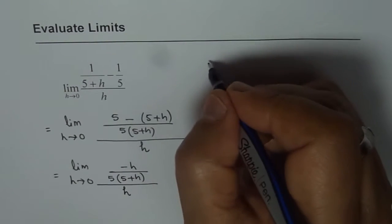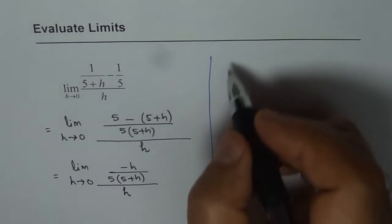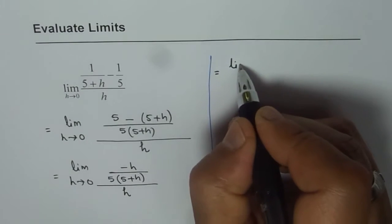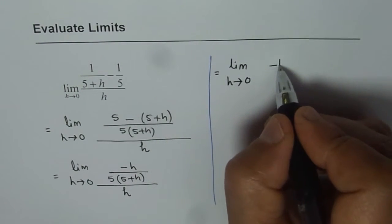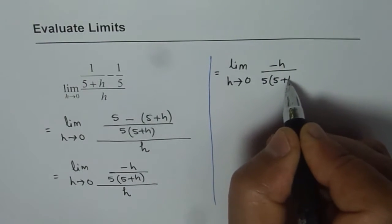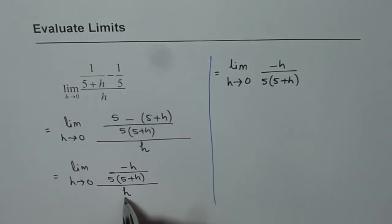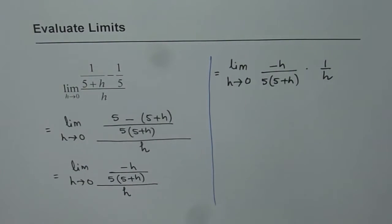So we can rewrite this as a product. Now this is like a division statement. So we can write this as limit h approaches 0, -h over 5 times (5+h), divided by h. That means times 1/h. That is what it is.